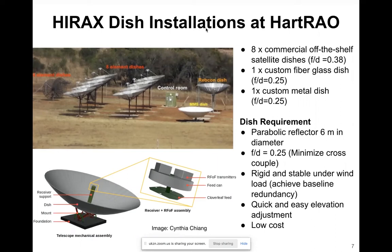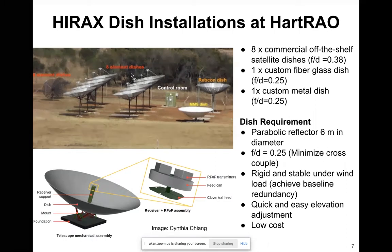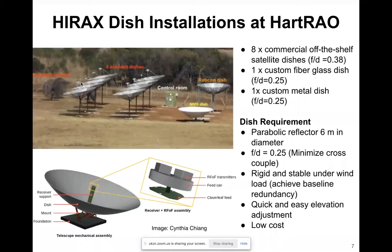This is the current dish installation at our trial site. We have eight element offset satellite dishes with a focal ratio of 0.38. The problem with this focal ratio is it exposes the feed to things like crosstalk with neighboring dishes.